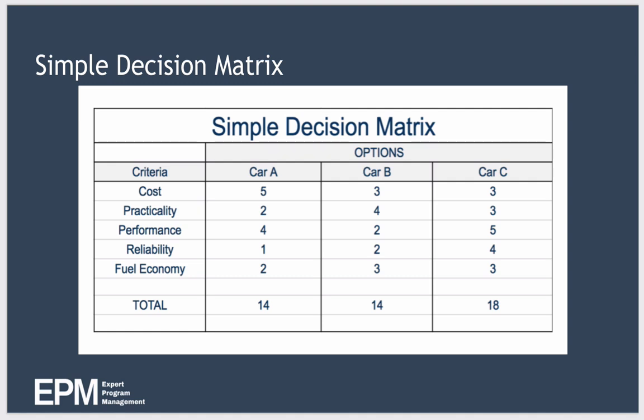Decision matrix can sound like a complex term, but it's really a very simple tool to use. In this decision matrix you can see here we're trying to decide which car to buy. To use the matrix, you simply follow these steps. In the leftmost column of the table, list each of the criteria which you wish to evaluate your options. So some of the criteria for a car would be cost, practicality, performance, etc. The next thing you need to do is list the options available to you across the top. So we have three cars: car A, car B, and car C.